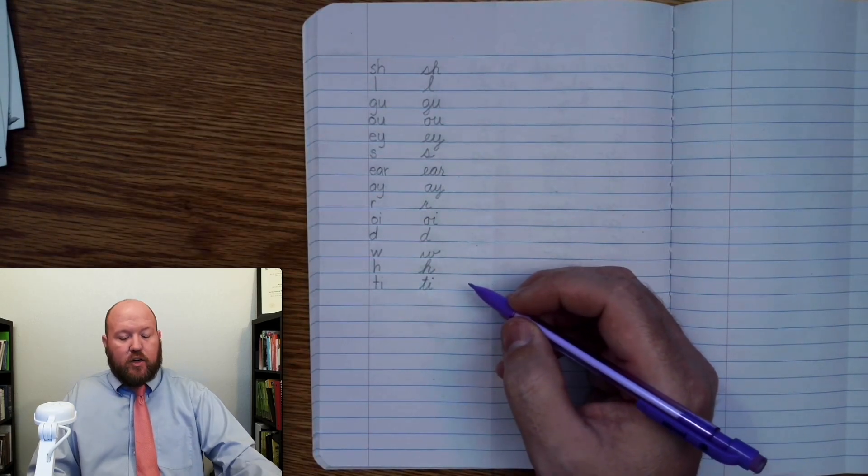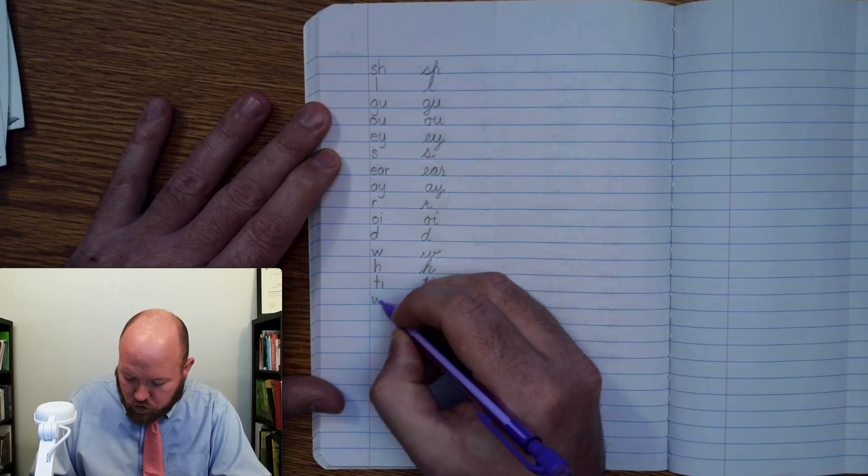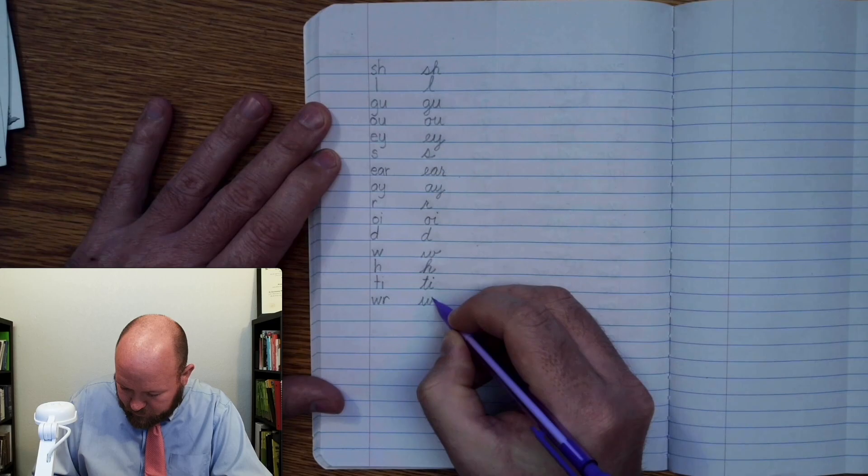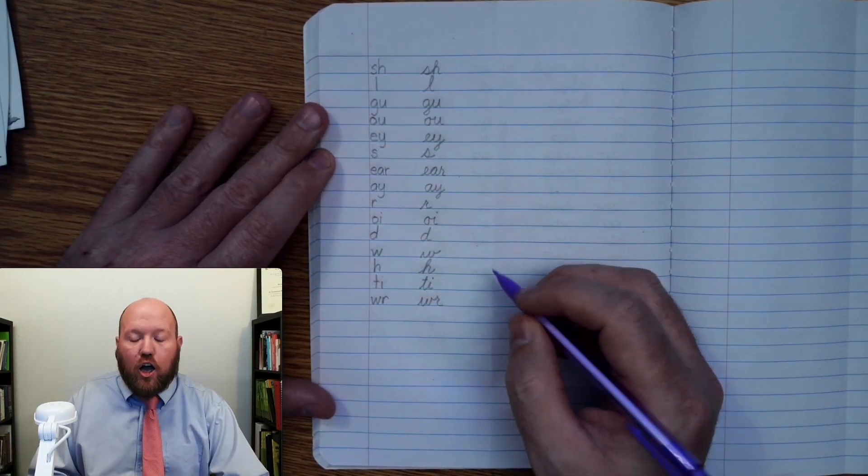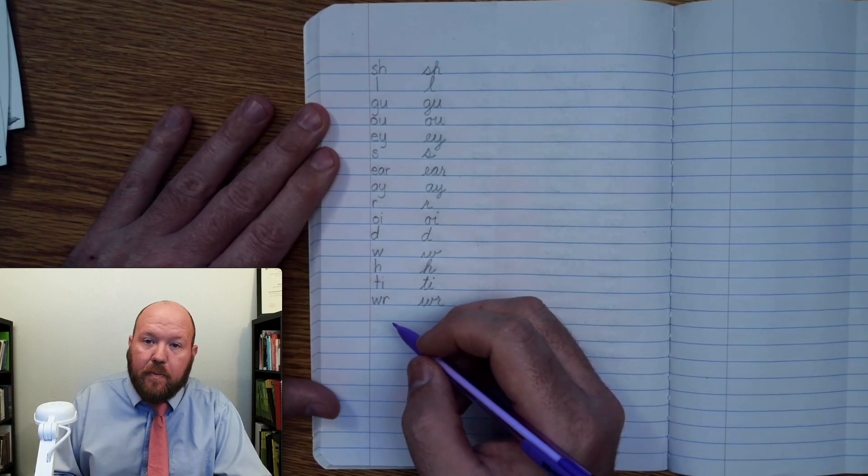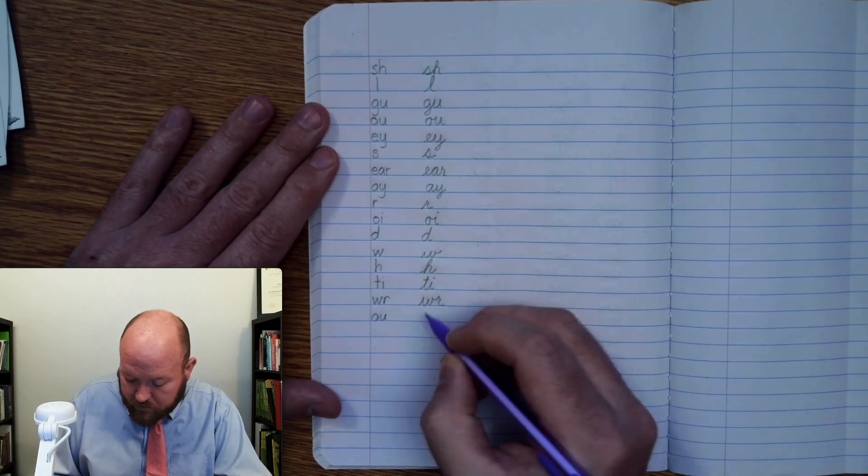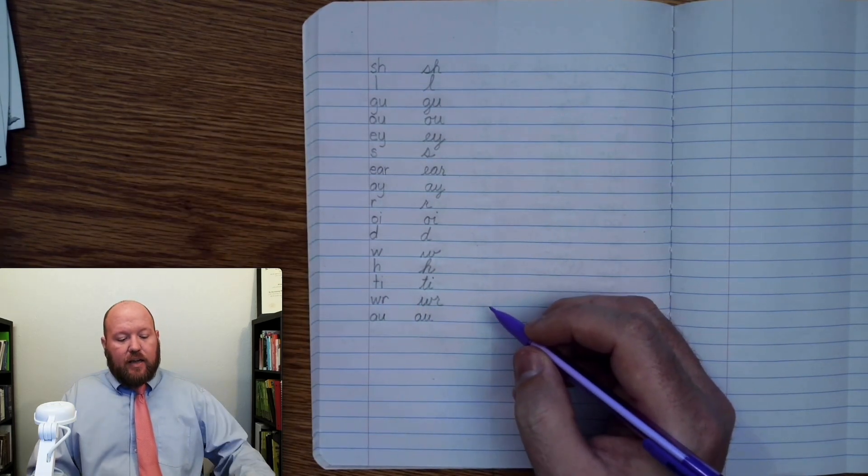The next one. R. Two letters. R. Two letters. The next one. A. Not used. A. Not used.